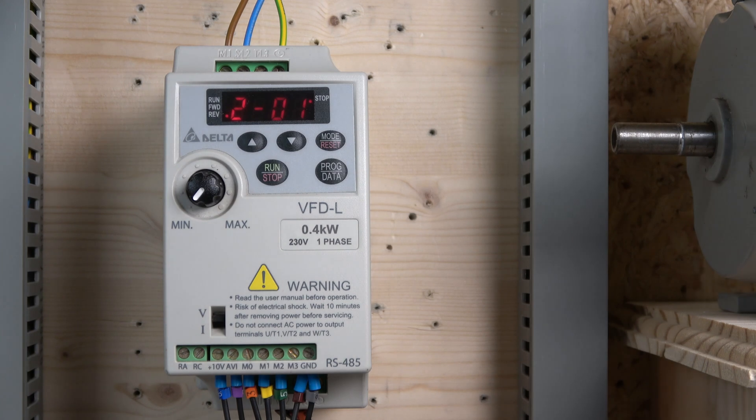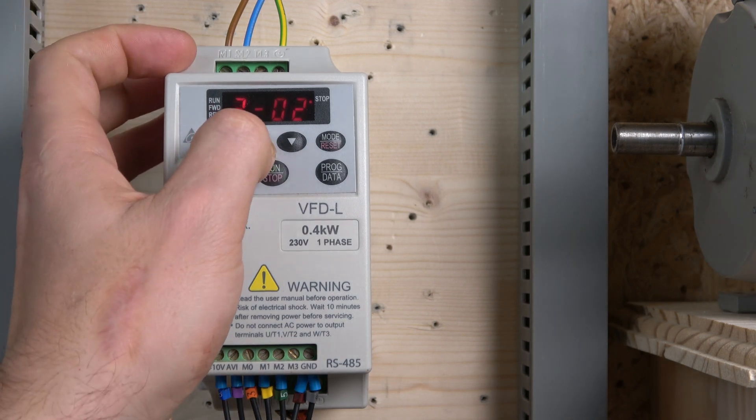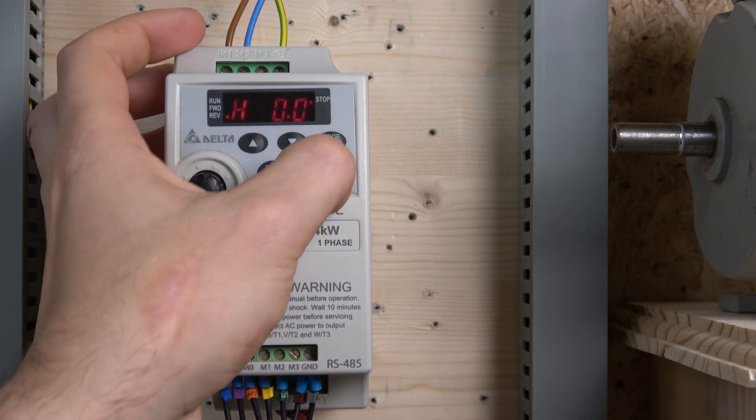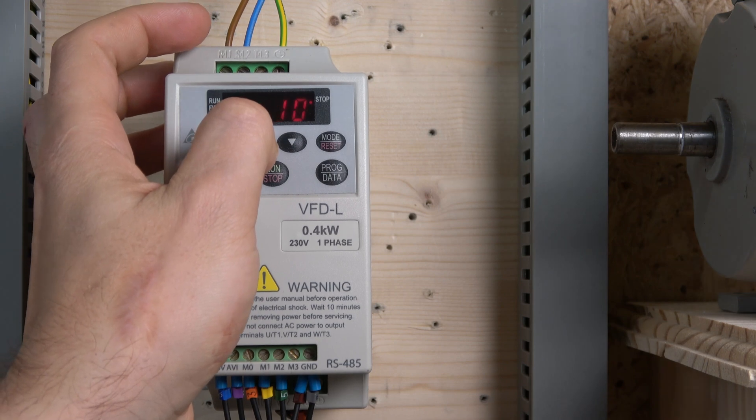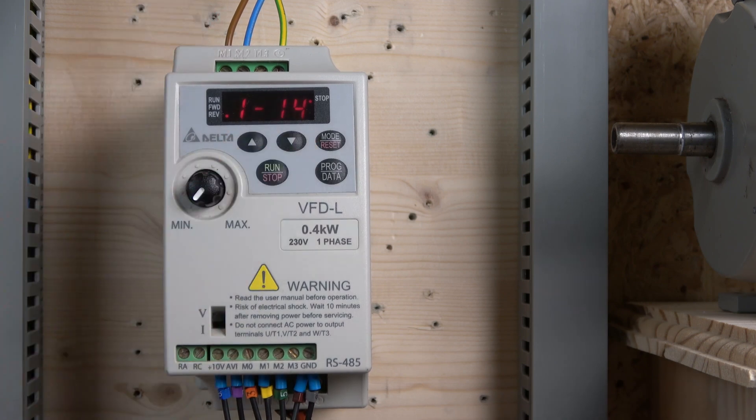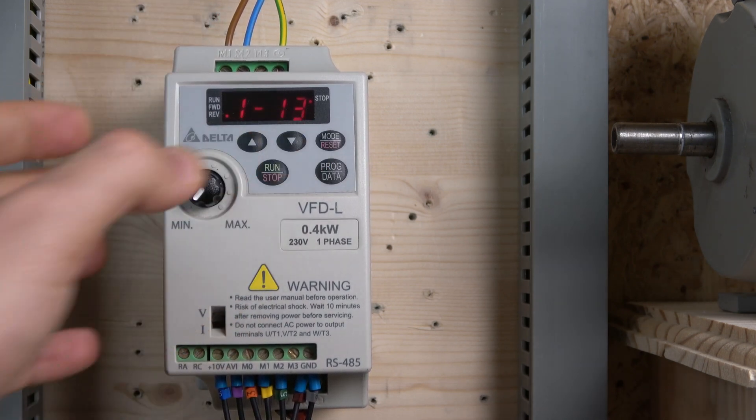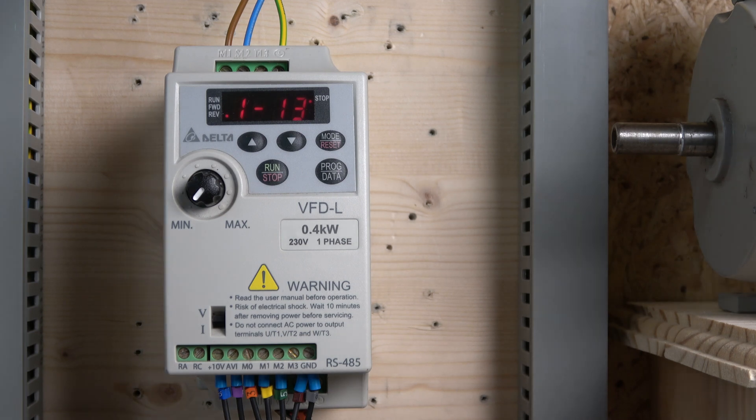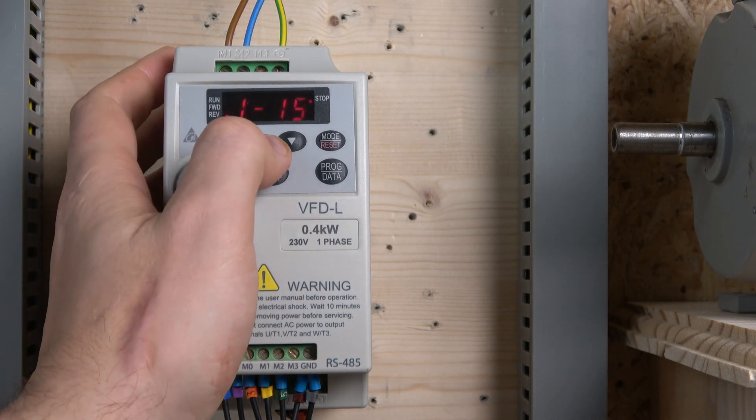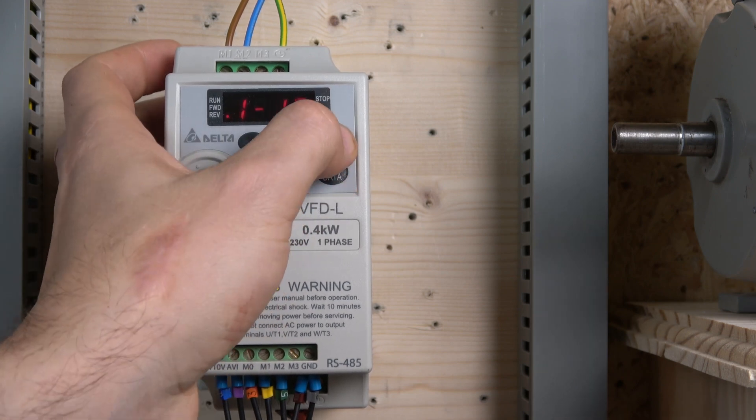From there on we need to set up our acceleration for jog and actual jog. That is going to be in parameter 1-13 and 1-14, that's going to be deceleration and acceleration. And obviously if you want to change your jog frequency, it is in 1-15. I believe it's standing at six hertz.